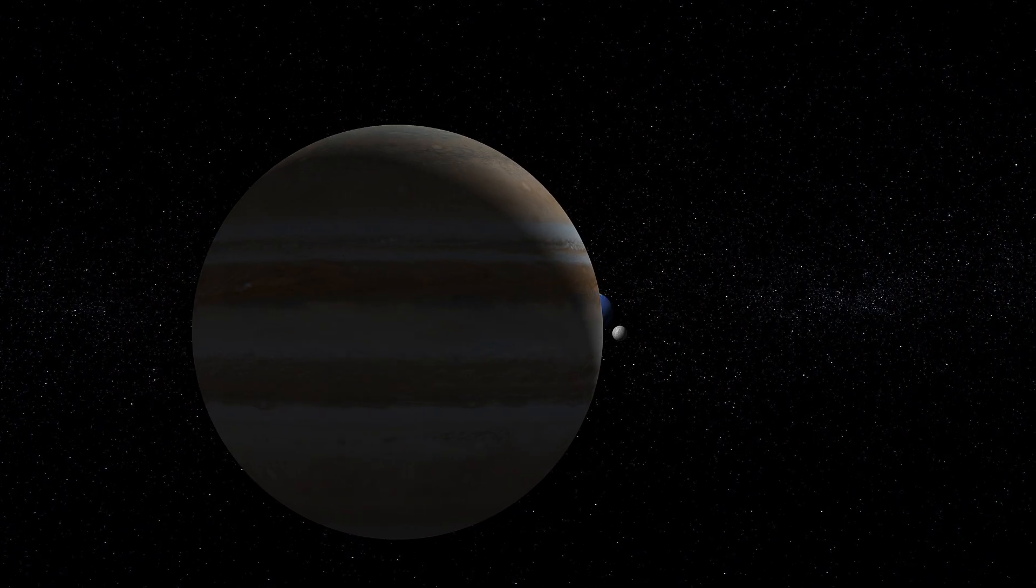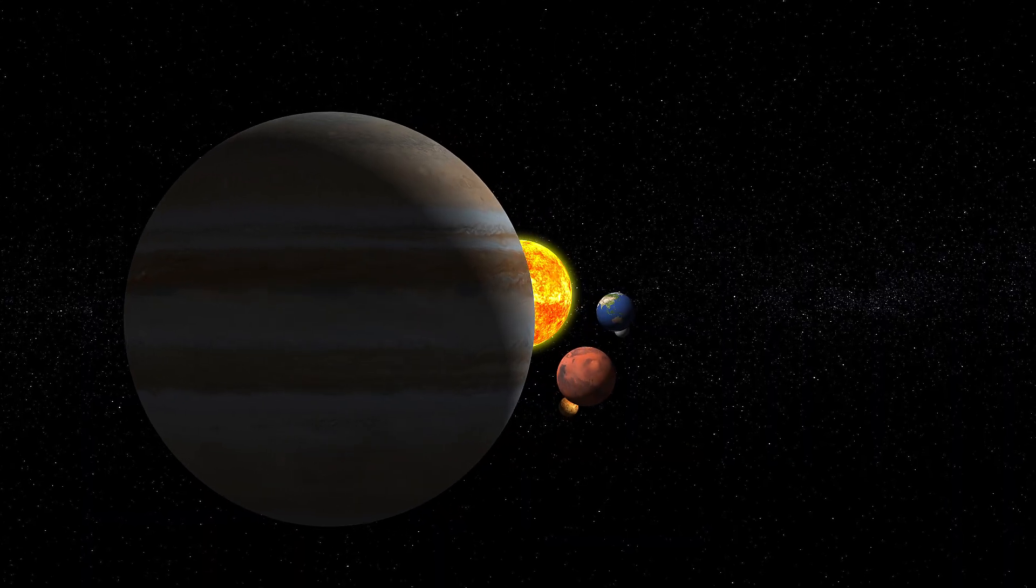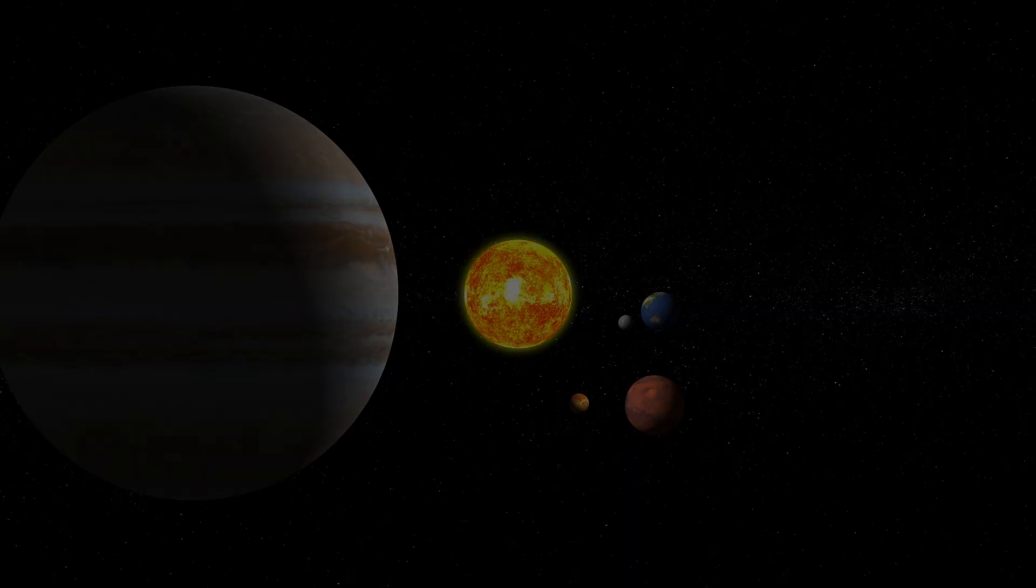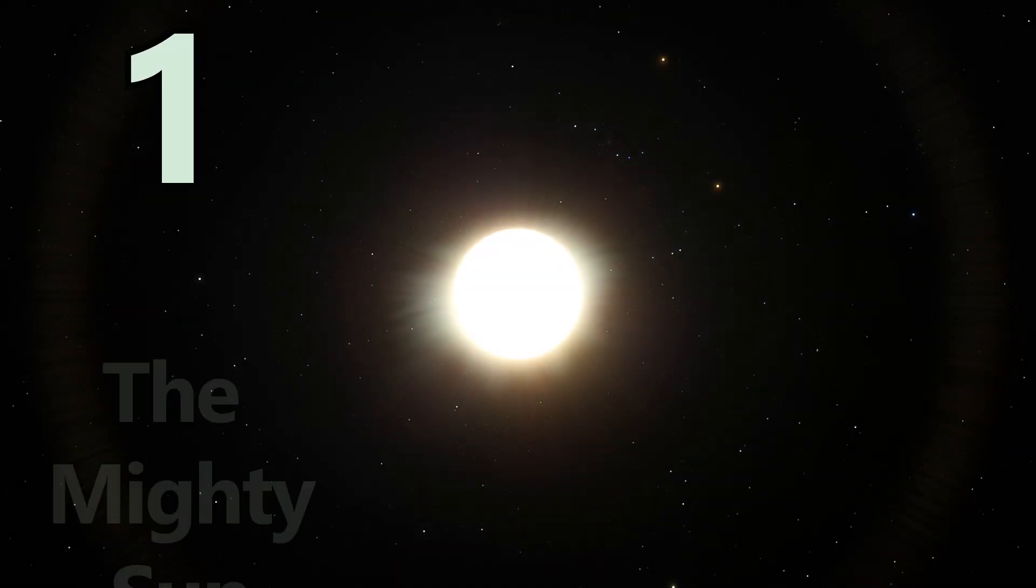While everything in space is constantly moving, one object dominates the Solar System in size and mass. Number one, the Mighty Sun.